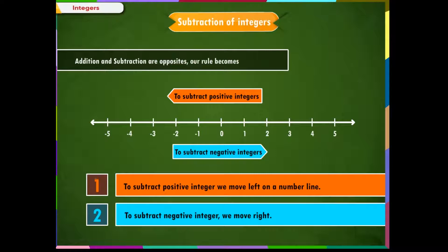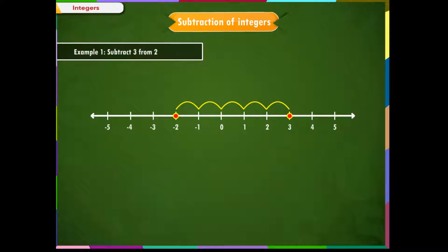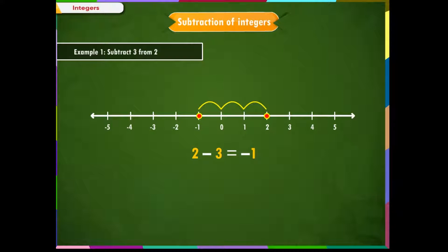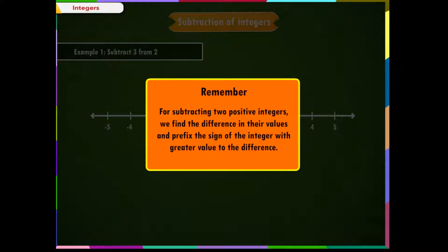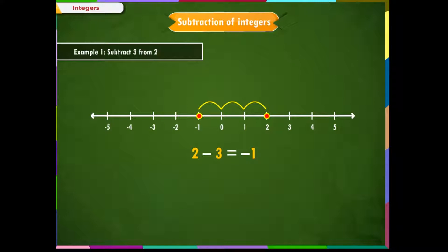Example 1: Subtract 3 from 2. We write this problem as 2 minus 3. Using a number line, mark the first integer. Since we are subtracting a positive integer, that is 3, as per our rule, we start from 2 and move 3 steps towards left. We reach at minus 1. Therefore, 2 minus 3 is equal to minus 1. Another method: for subtracting two positive integers, we find the difference in their values and prefix the sign of the integer with greater value.